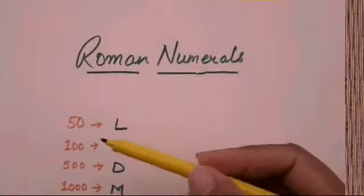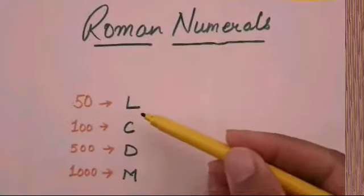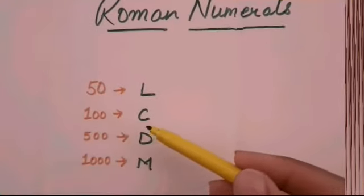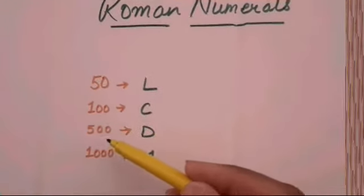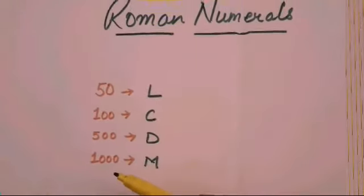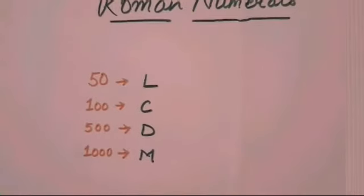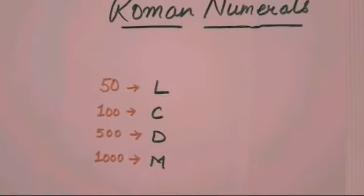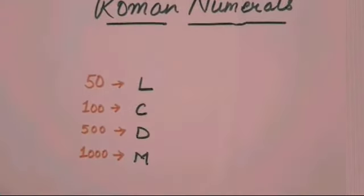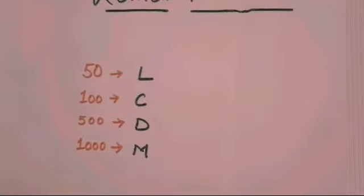In the previous video, I told you that 50 is represented by L, 100 is represented by C, 500 is represented by D, and 1000 is represented by M. Today we talk about large numbers more than 100 and how to represent them in Roman numerals.